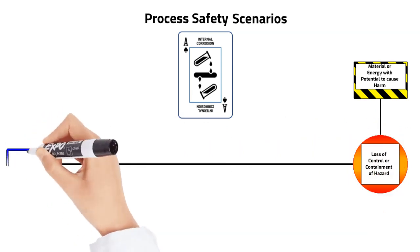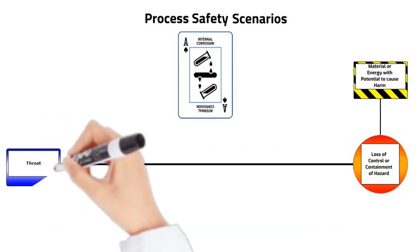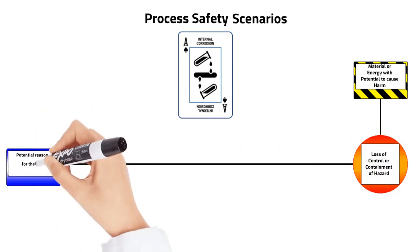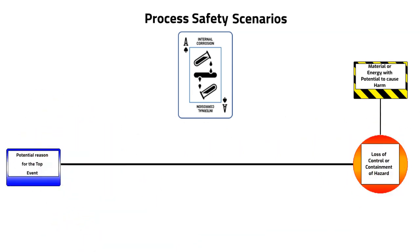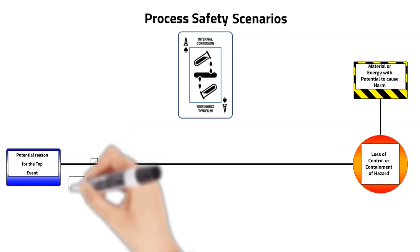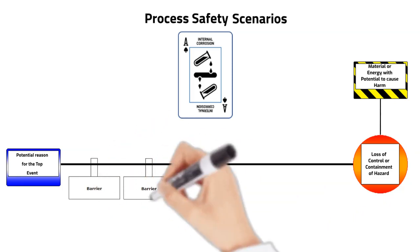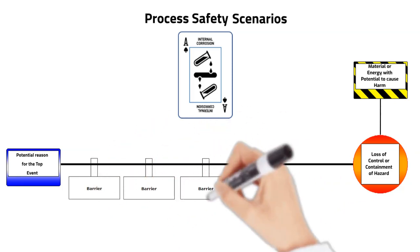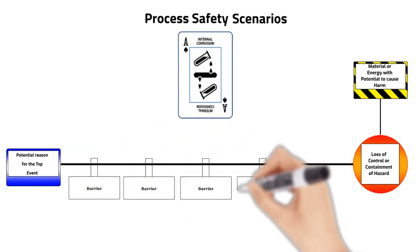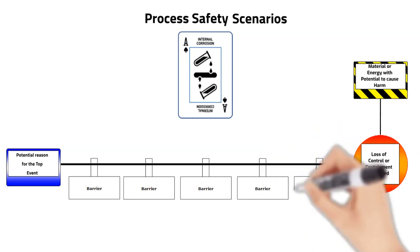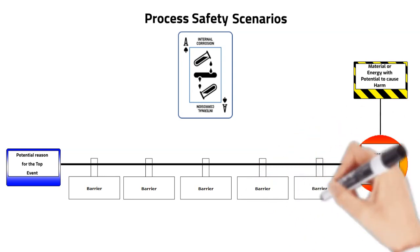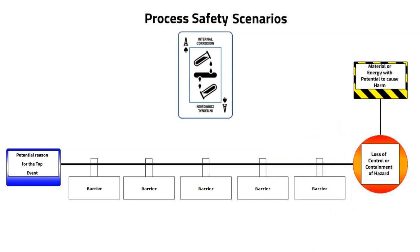Each top event or card may have several threats which are possible initiating events that can result in a loss of control or containment of a hazard. Each threat may be prevented from creating the top event by implementing and sustaining barriers, which are control measures or groups of control elements that on their own can prevent a threat developing into a top event.